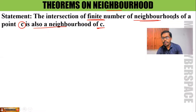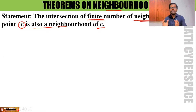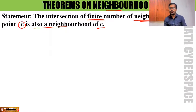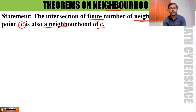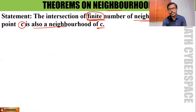That means, suppose we have some finite number of neighborhoods of a point C. I have to show that if I intersect the finite number of neighborhoods, that will again be a neighborhood of the point C. This is the statement of the theorem. But let me tell you why it is given as finite — I will discuss this condition after proving the theorem.